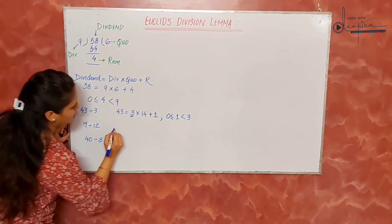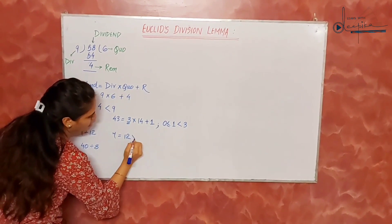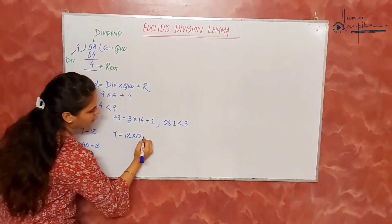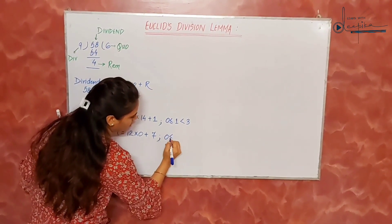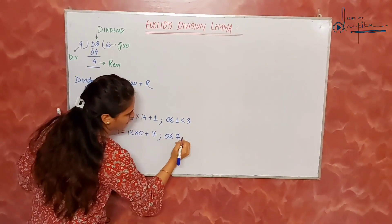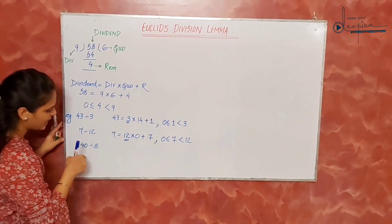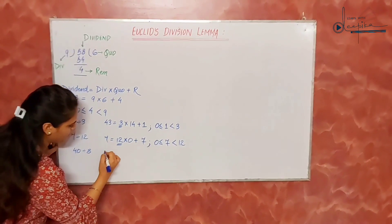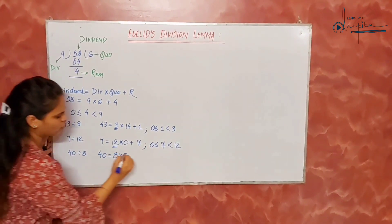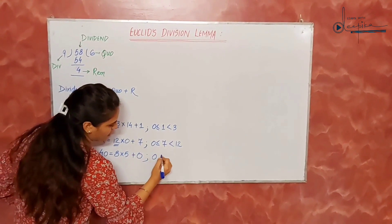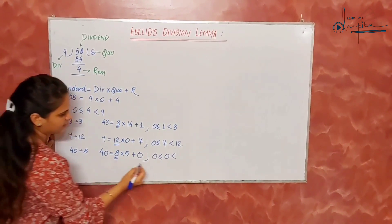For 7 divided by 12: 7 equals 12 multiplied by 0, so 12 into 0 is 0, giving remainder 7. The remainder should be greater than or equal to 0 and less than the divisor, which is 12. For 40 divided by 8: 40 equals 8 multiplied by 5 equals 40, so remainder is 0. The remainder can be equal to or greater than 0 but less than the divisor, which is 8.